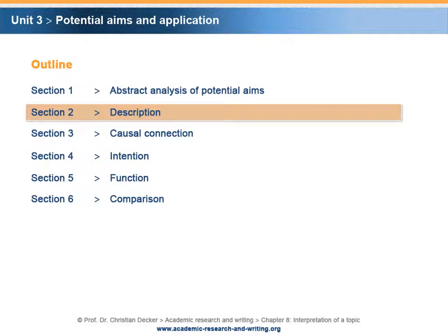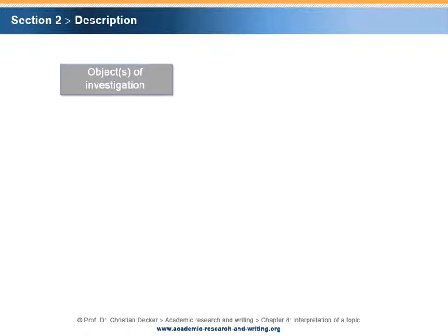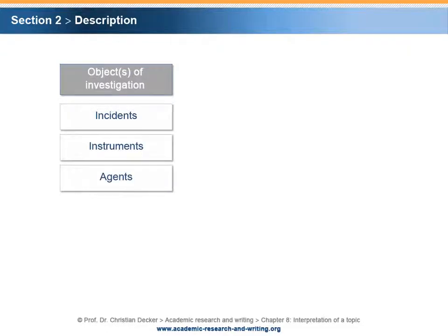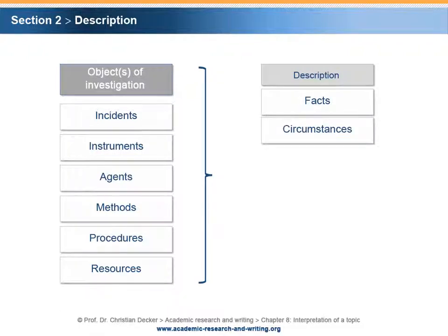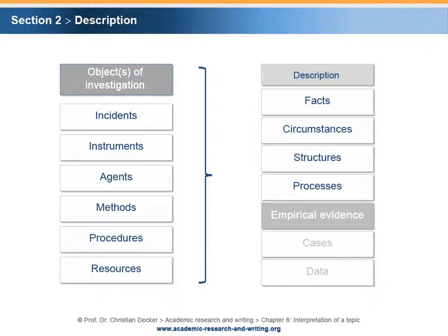Section 2 – Description. An object of investigation — for example an incident, an instrument, an agent, a method, or a procedure — can be described, characterized, or explained. The description has to be restrained to facts, circumstances, structures, and processes that form part of the objects of investigation. Sometimes real cases or data can be used in order to provide additional empirical evidence.